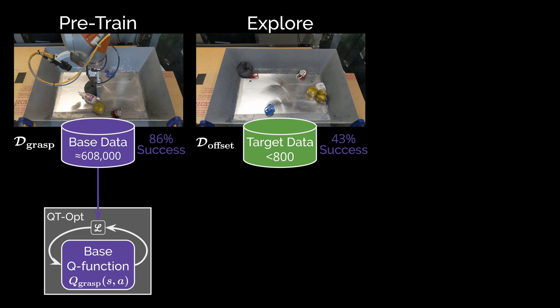Using these three ingredients—a base dataset, a base Q function, and a target dataset—we can execute our adaptation procedure. Our goal is to create a high-performance Q function for the target task variation.